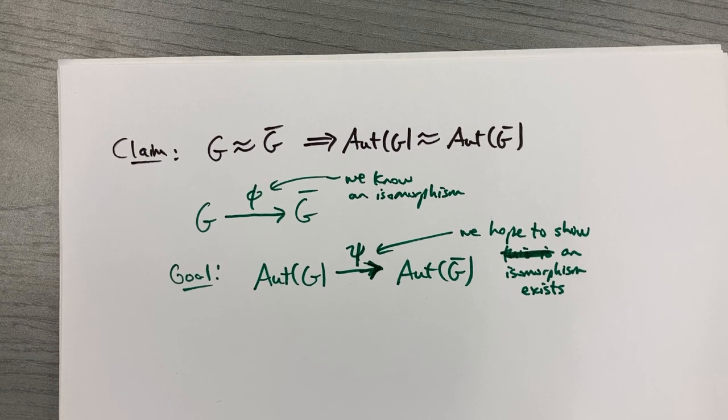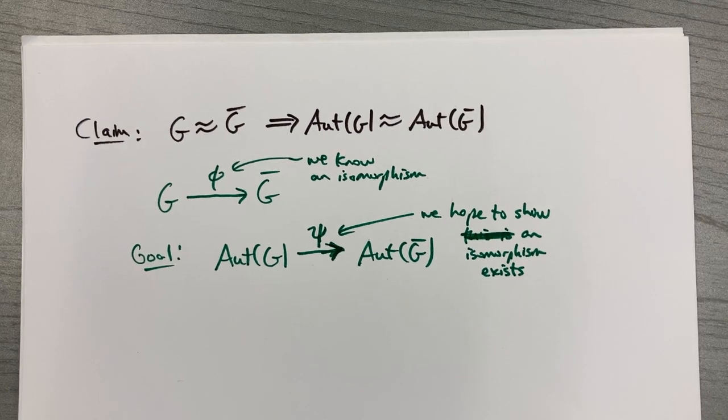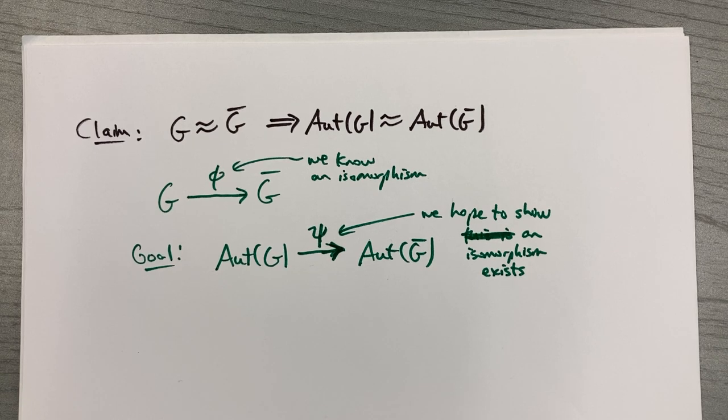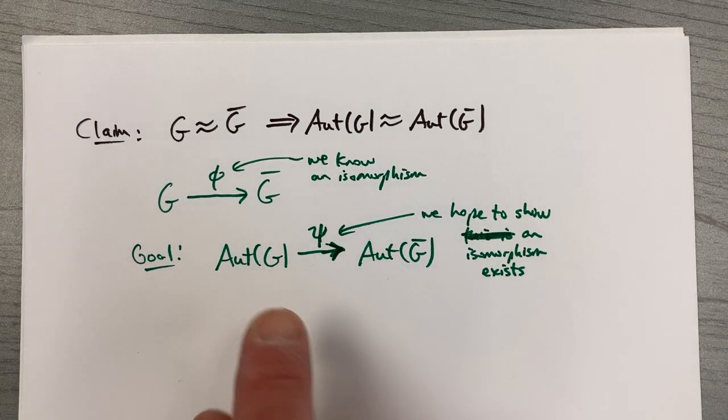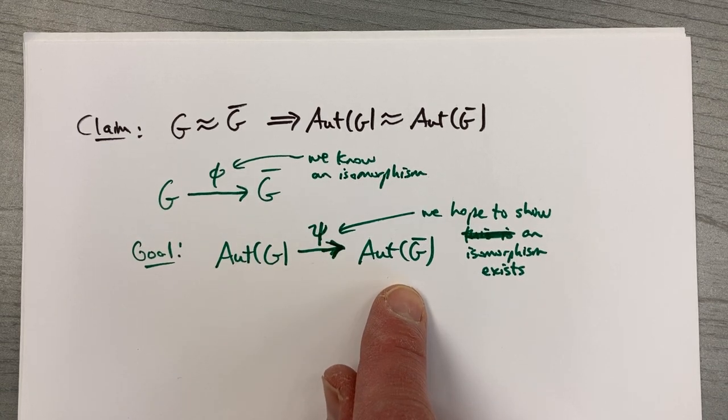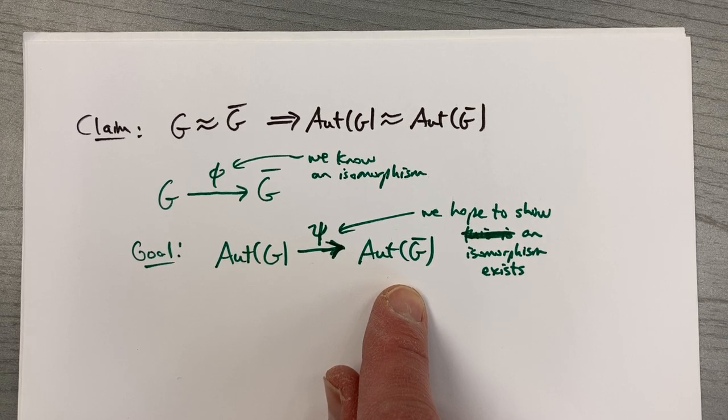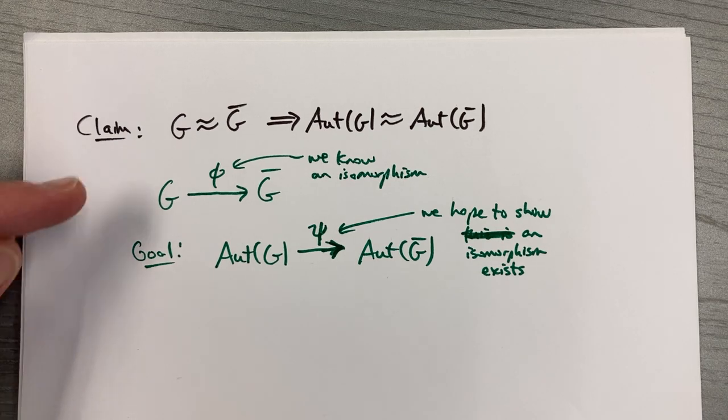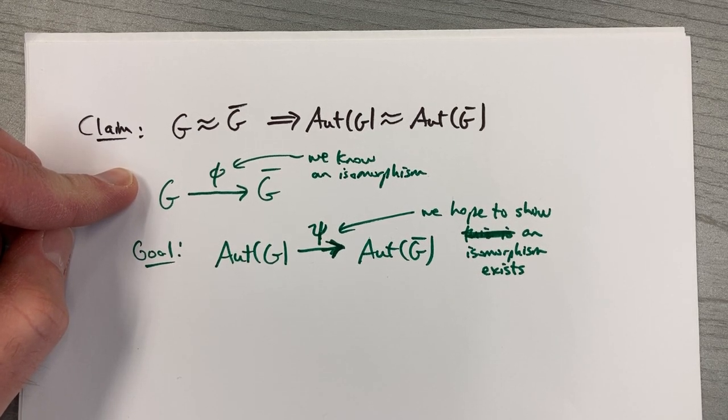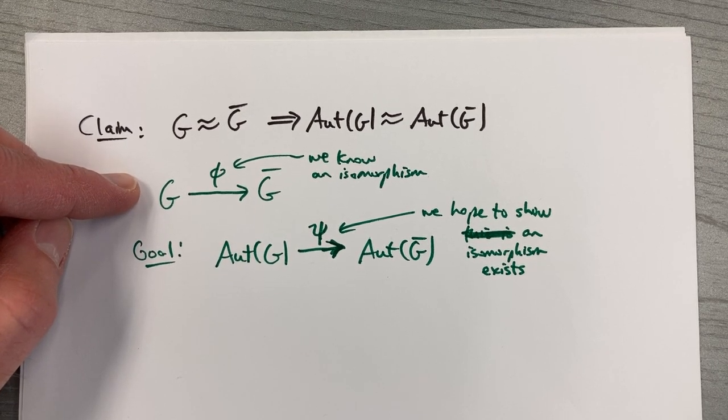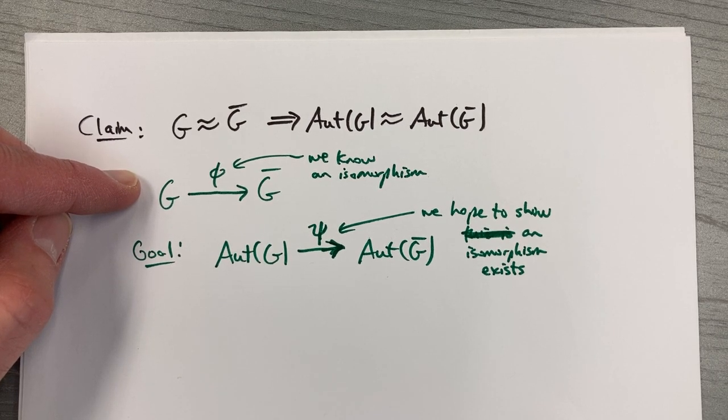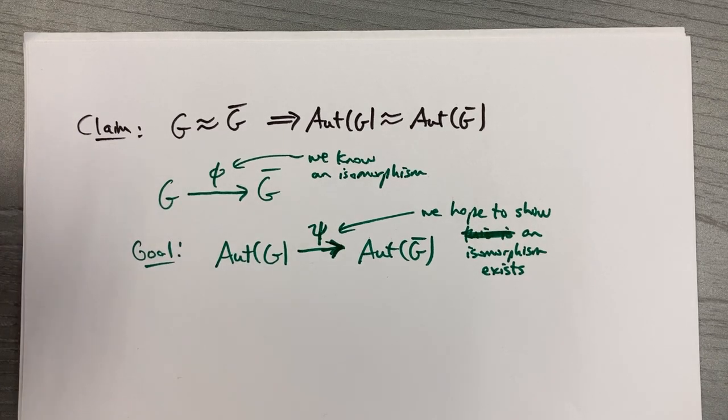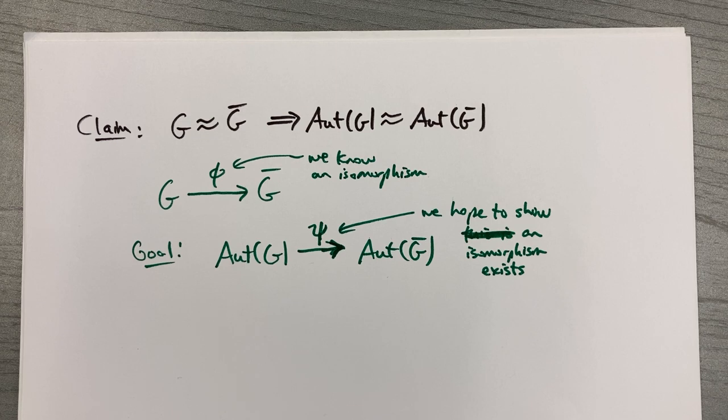Our goal is to come up with an isomorphism from Aut(G) to Aut(G-bar). What should I call that? How about psi? This is the kind of thing that you look at it, stare at it for like an hour, go get some coffee, stare at it for another hour. However, I have no idea what to do. How do I take an arbitrary element of Aut(G) and map it to an element of Aut(G-bar)? How in the world would you do such a thing?